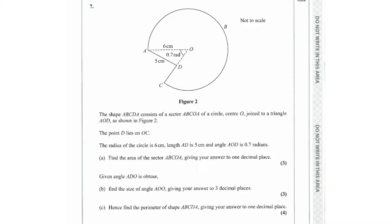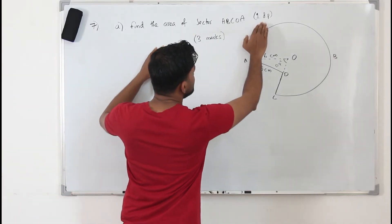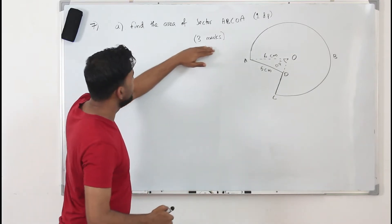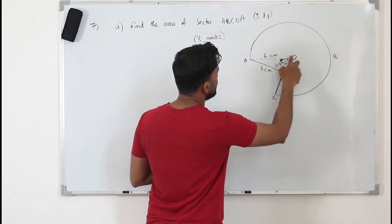Question number 7. We are given a major sector ABC with center O. The radius is 6 cm, AD is 5 cm, and the angle is 0.7 radians. Part A is to find the area of the sector ABCOA. We need to write our answer to one decimal place, and Part A is worth 3 marks.